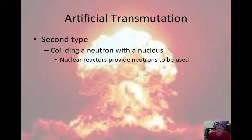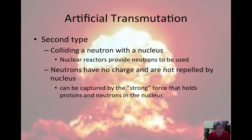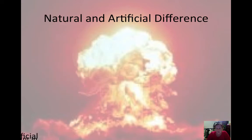It provides the neutrons to cause this transmutation. The neutrons have no charge, so they're not repelled by the nucleus. There's no repulsive forces to overcome. Instead, it's captured by the strong force, which is the force that holds protons and neutrons in the nucleus.